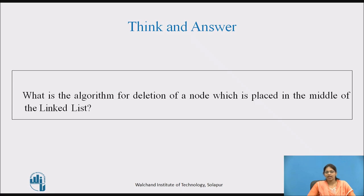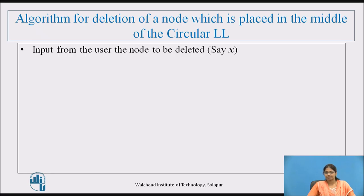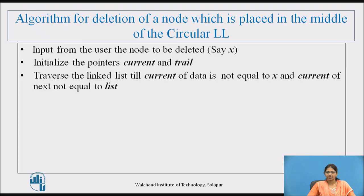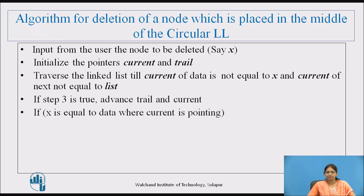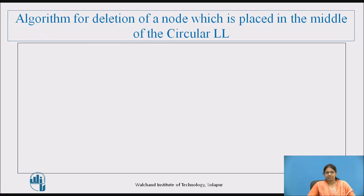Try to think: what is the algorithm for deletion of a node placed in the middle of the circular linked list? Pause the video and note down the answer. Algorithm: Input the node to be deleted, say x. Initialize pointers current and trail. Traverse the linked list while current's data is not equal to x and current's next is not equal to list. If step 3 is true, advance trail and current. If x equals the data where current is pointing, delete the node by assigning trail's next to current's next. Otherwise, print that the node to be deleted is not found.